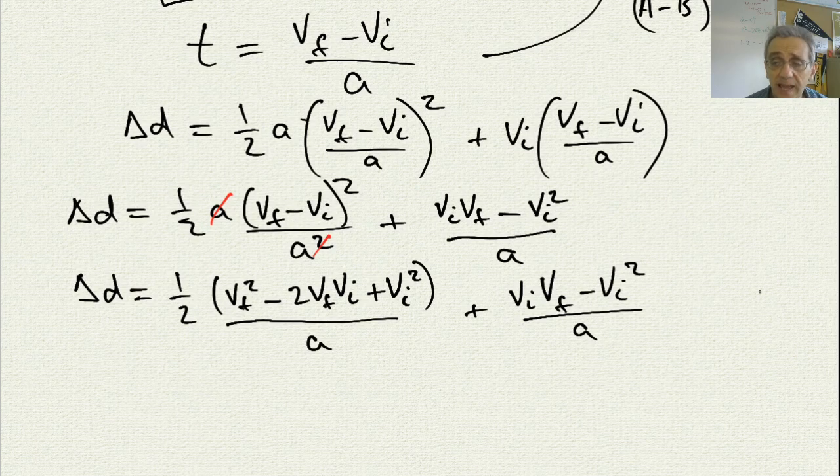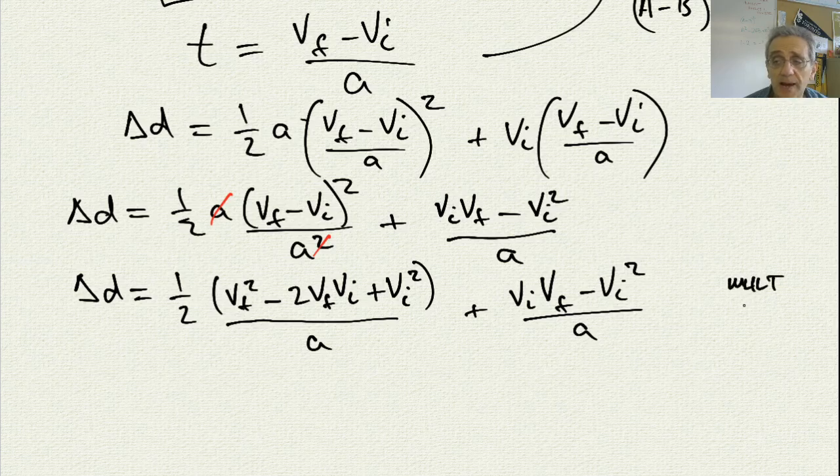Now what I'm going to do is I can recognize now that I can multiply this entire equation by a. And not only am I going to multiply it by a, so I'll say I want to multiply by 2a. If I multiply by 2a, this one half disappears and both of these a's disappear.